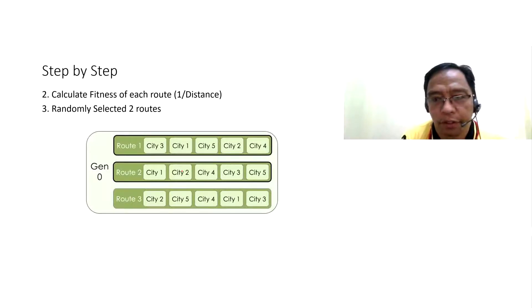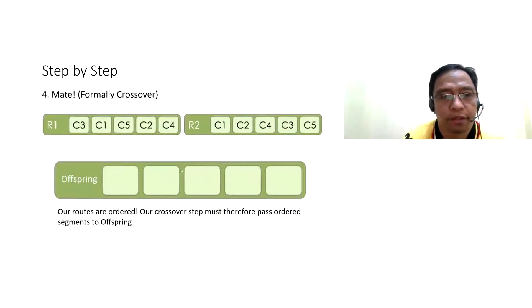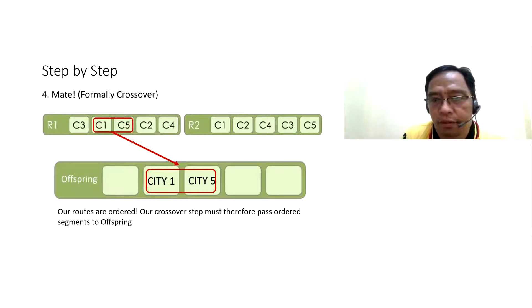Randomly means the fitter you are, the higher chances to be selected. This algorithm is modeled after biology. Step four, crossover. Here we have two parent routes, R1 and R2. Our routes are ordered. Our crossover step must therefore pass ordered segments to offspring. Here, I'm going to make an offspring. First, we take a random segment from one of the parents transplanted directly into the offspring. Route 1. Notice how the index is the same as the parent. C1 and C5. Notice.